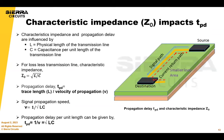Here's the relationship between characteristic impedance and propagation delay. They both depend on the physical length of the transmission line and the capacitance per unit length of the transmission line. If you vary the impedance, there can be a change in the propagation delay.